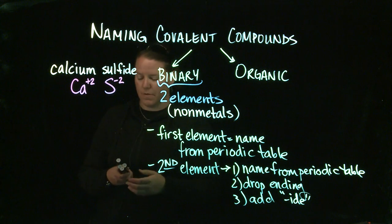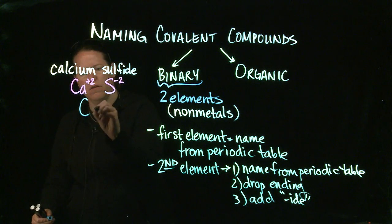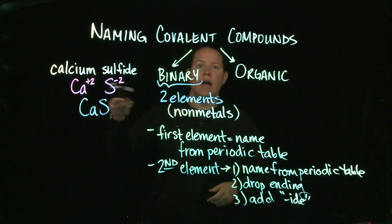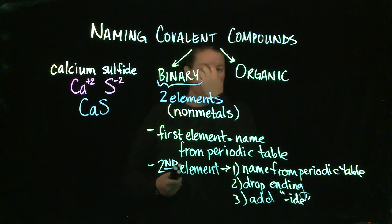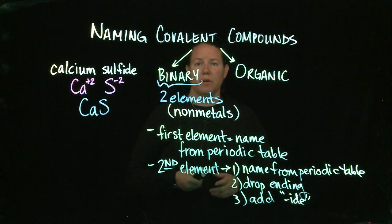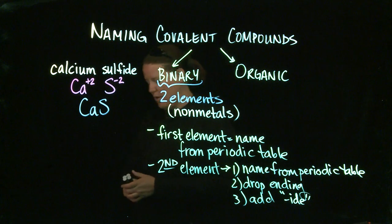And if I am going to balance the charges of these so that my overall charge of the compound is zero, then I get CaS because they're already the same number with opposite signs. When I write down the name calcium sulfide, I know how many of them there are of each.